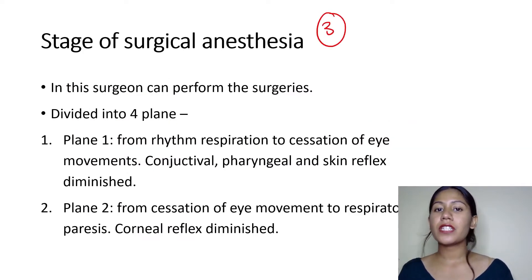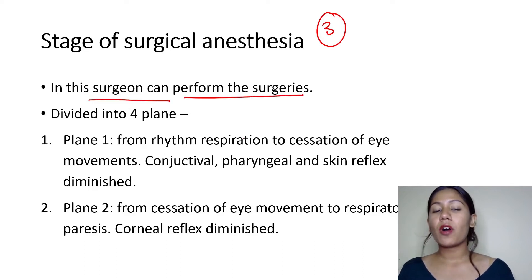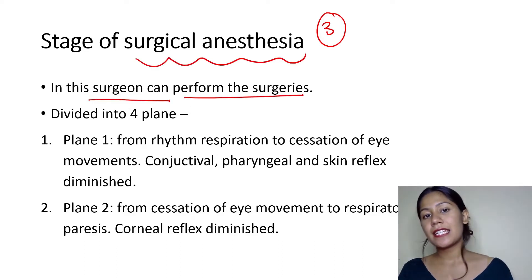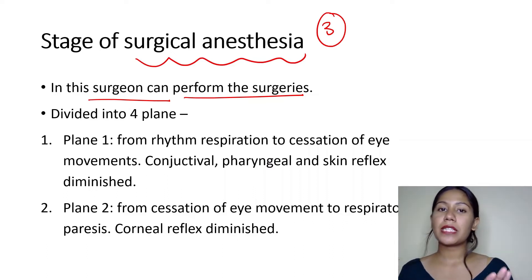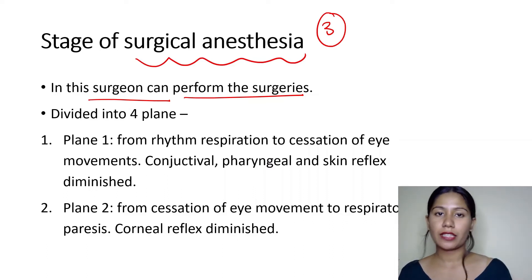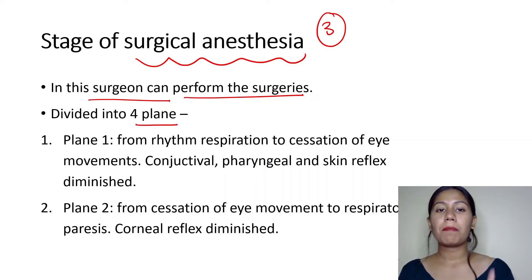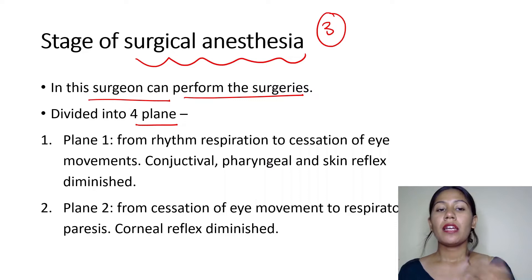The third stage is the stage of surgical anesthesia. In this stage, the surgeon can perform surgery — from the name itself, it is clear that surgery is performed in this stage. This stage has four planes: Plane 1, Plane 2, Plane 3, and Plane 4.